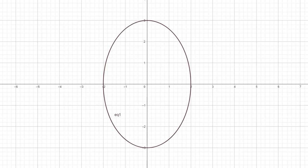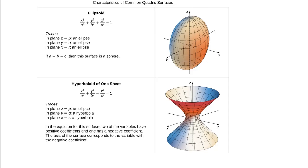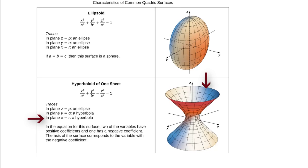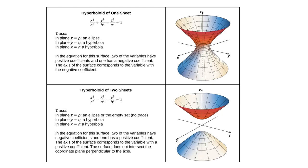Next let's consider a hyperboloid of one sheet. Notice the equation is x²/a² + y²/b² − z²/c² = 1. Because the subtraction is in the z² term, this is going to be a hyperboloid opening up and down the z-axis. When z = 0 we have an ellipse, and at z = 1, 2, etc., we get successive ellipses. But slicing through the xz plane (y = 0) gives a hyperbola, and slicing through the yz plane (x = 0) also gives a hyperbola.